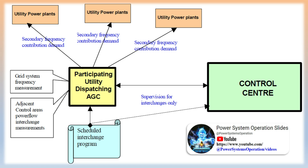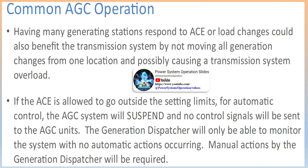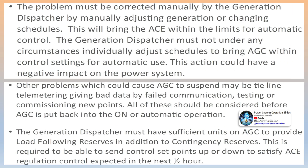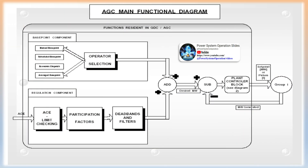ACE control parameters: ACE is a calculation performed by the AGC computer system that indicates the balance between generation and load in the control area. ACE is calculated using inputs from the power system and computer system. Tie-line bias TLB: the most commonly used ACE calculation parameter mode is called tie-line bias. This is the AGC mode that should be operating in most circumstances. In TLB mode, the ACE is calculated using the system frequency and tie-line loading. Constant net interchange CNIC: another AGC mode available to the generation dispatcher is constant net interchange. In this mode, the frequency component of the ACE calculation is removed. The AGC will control to the tie-line schedules and pulse the generation to ensure these flows are maintained. This could have a negative effect on system frequency as the AGC does not factor in the frequency and adjust for it as in TLB mode.